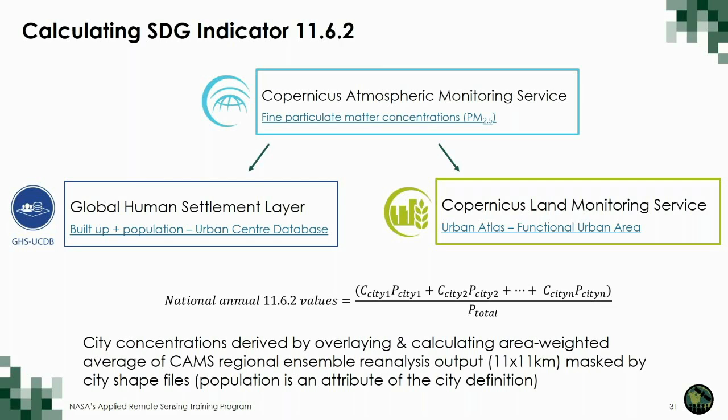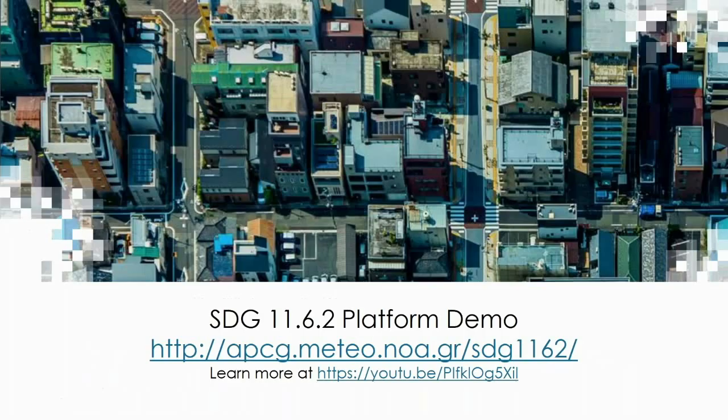For each country in Europe, the national indicator value of population-weighted PM values according to both city definitions is calculated using an algorithm, resulting in a functional knowledge platform with city-level information. To show what this looks like in practice and the functionality of the platform, we will now take you through a short demonstration.